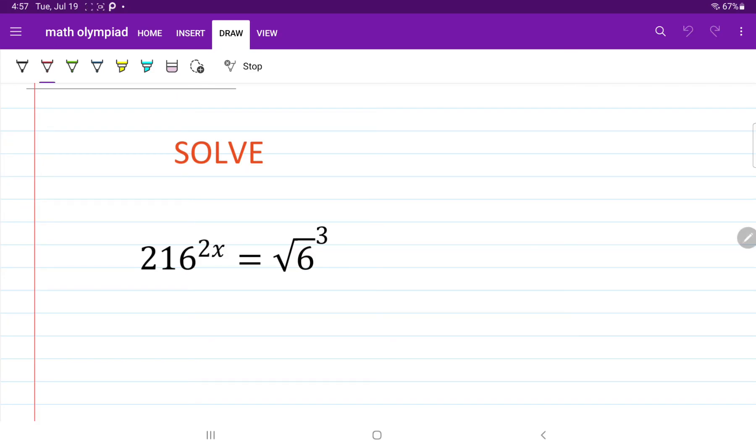Rule number one, we have the m root of a is equal to a to the power of 1 over m.